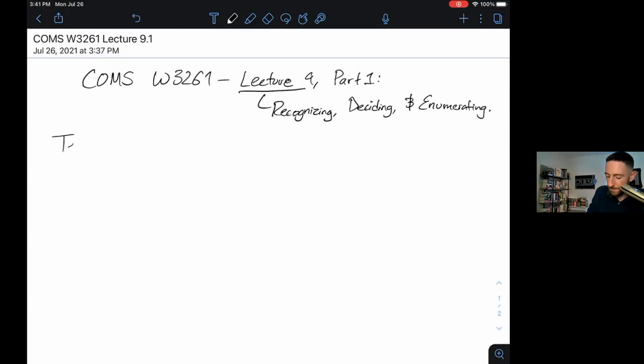The teaser for today is a question about a language. The question is, is the language of palindromes, that is, strings that are the same forwards and backwards, over the alphabet zero one, Turing recognizable?